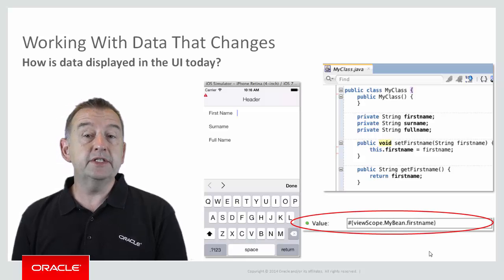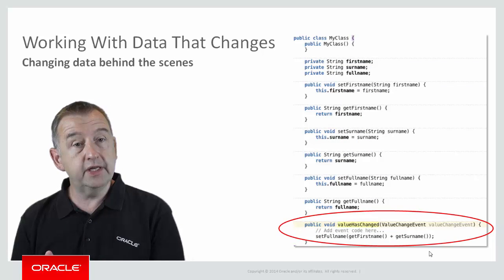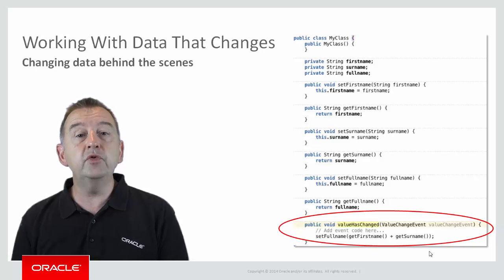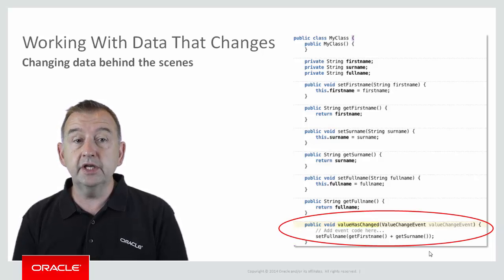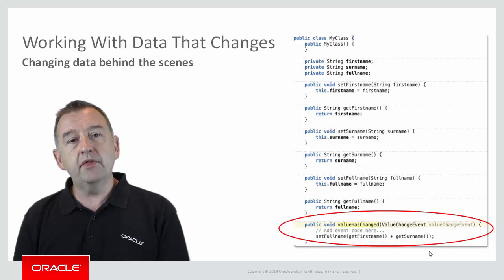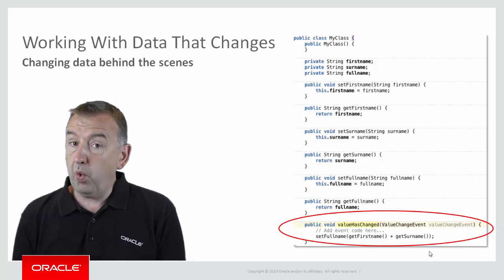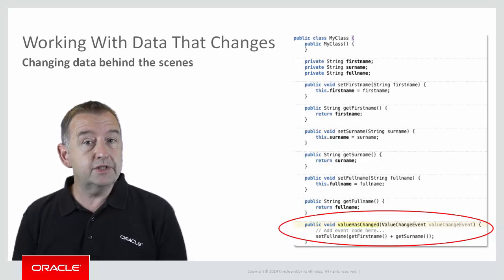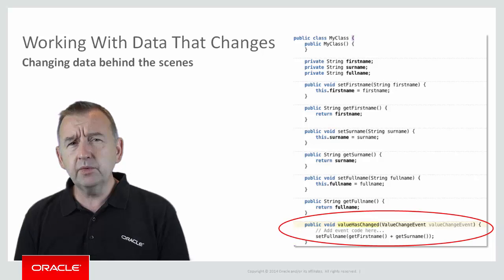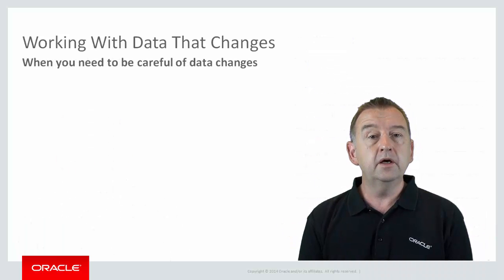Looking at more detail in our example, we have a value change event which is registered with both the first name and the surname field. The idea here is that if either of those fields is changed, then the full name is set to be a concatenation of first name and surname - a simple enough example. However, if we were to run this code and change first name or surname, we wouldn't see any changes. Why? The change event listener is definitely being called and the full name is being written to the full name property, so why don't we see the concatenated full name in the user interface?